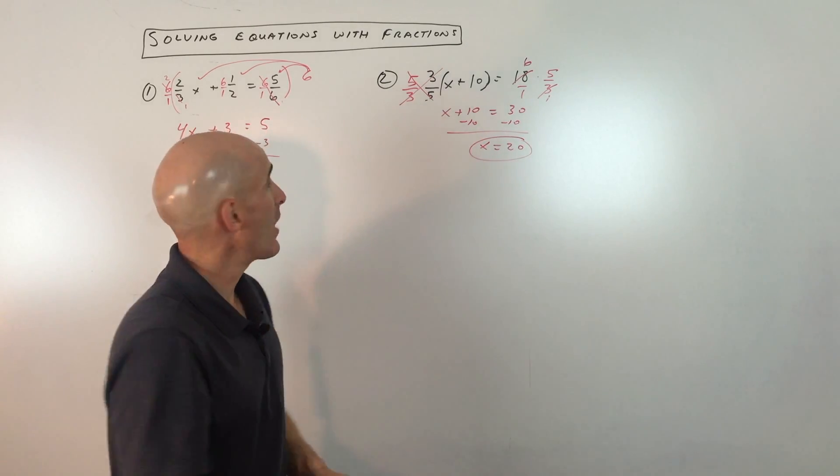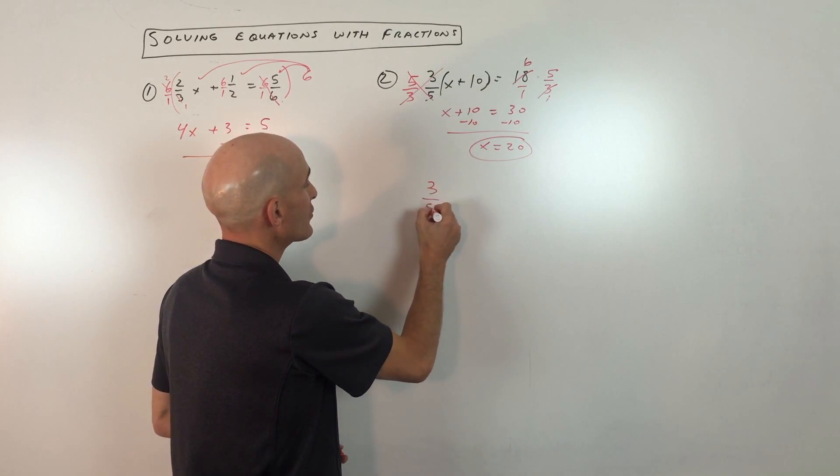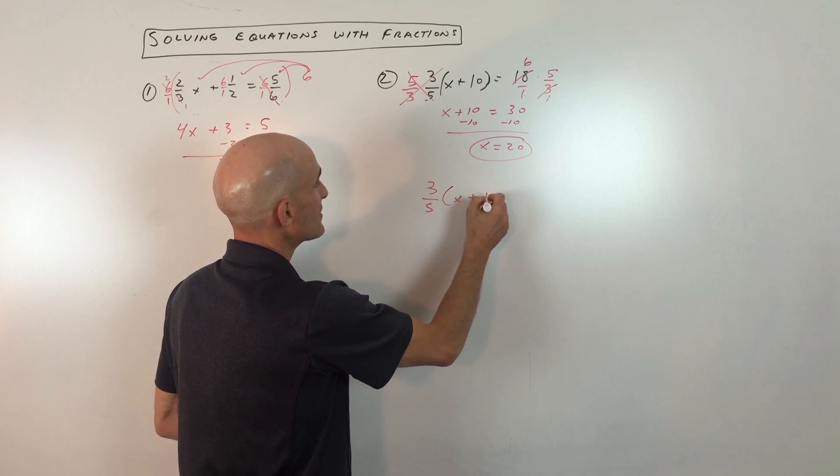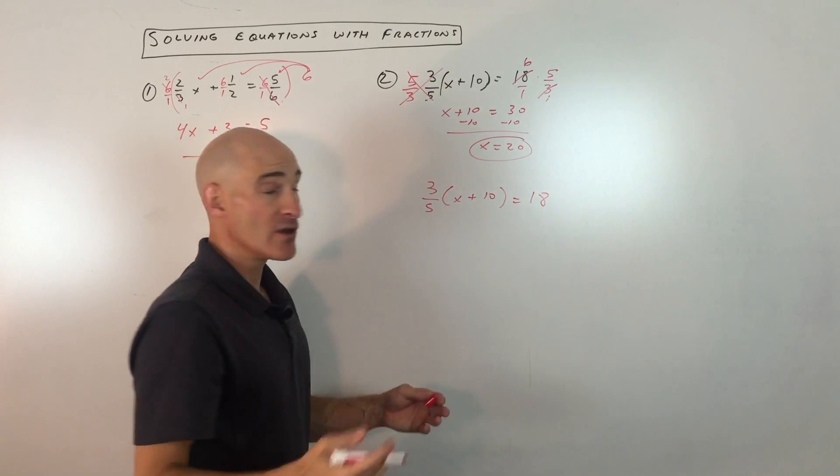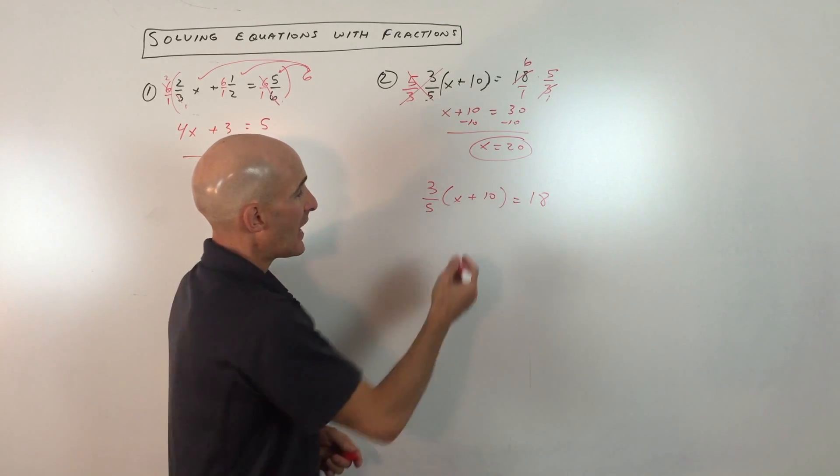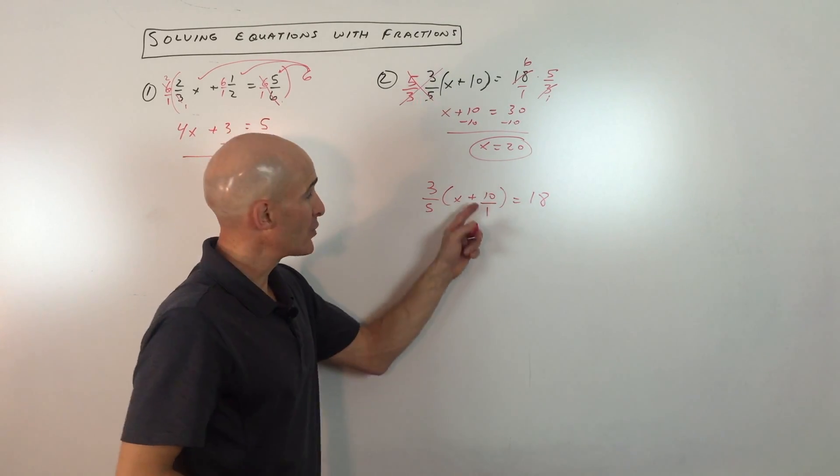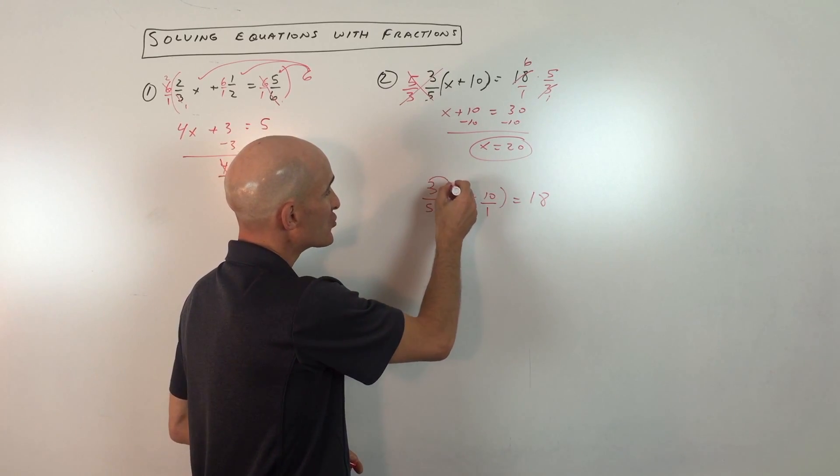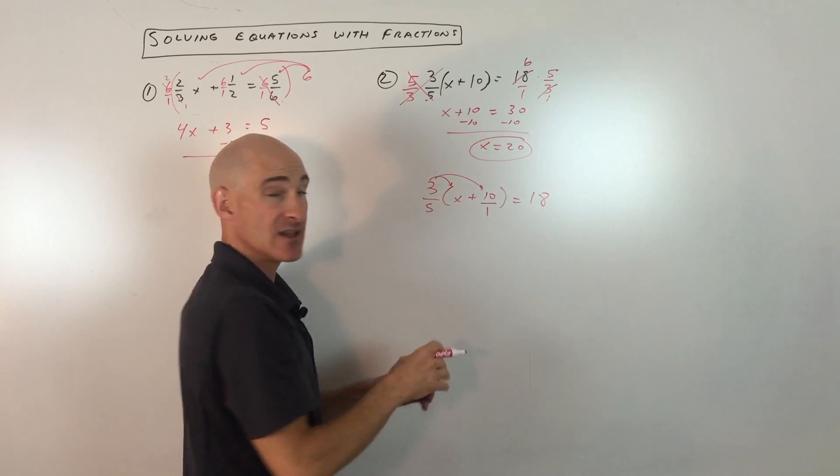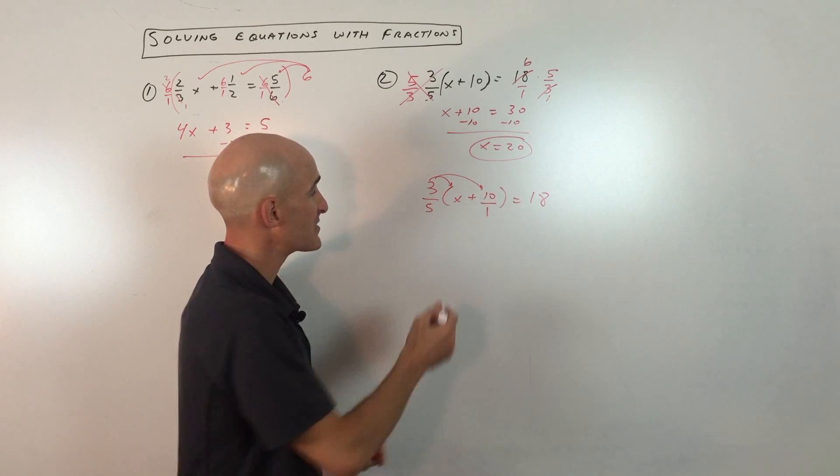Now another way to approach this problem, let's just write it down here again. We have 3 fifths x plus 10 equals 18. Another way to approach this problem is, again, any whole number can be thought of as a fraction by putting it over 1. And so what we're going to do is we're just going to distribute the 3 fifths into the parentheses. So 3 fifths times x and 3 fifths times 10.